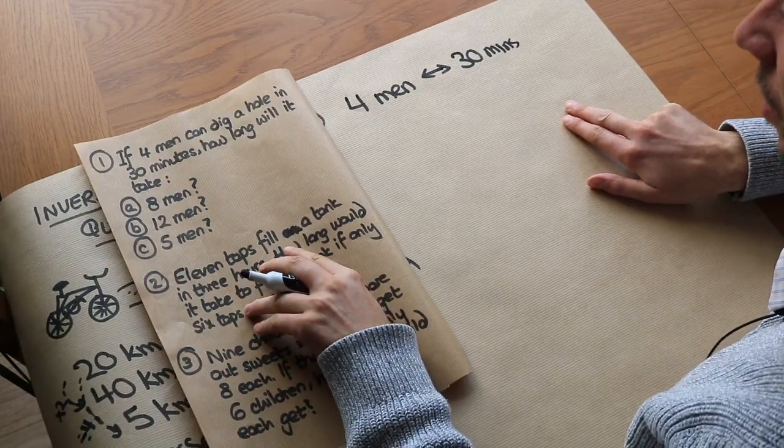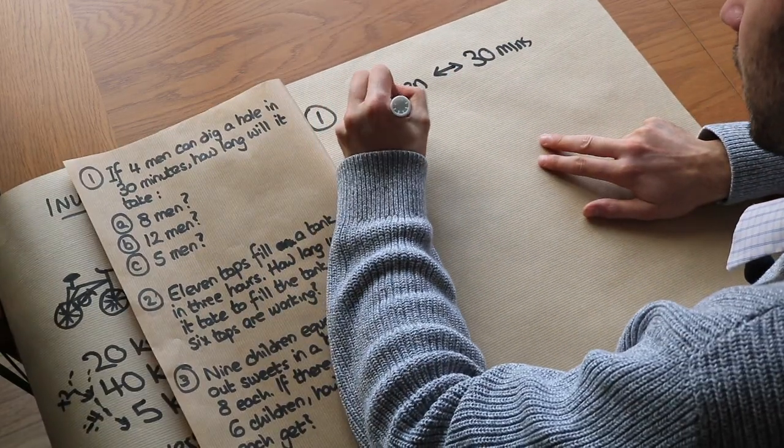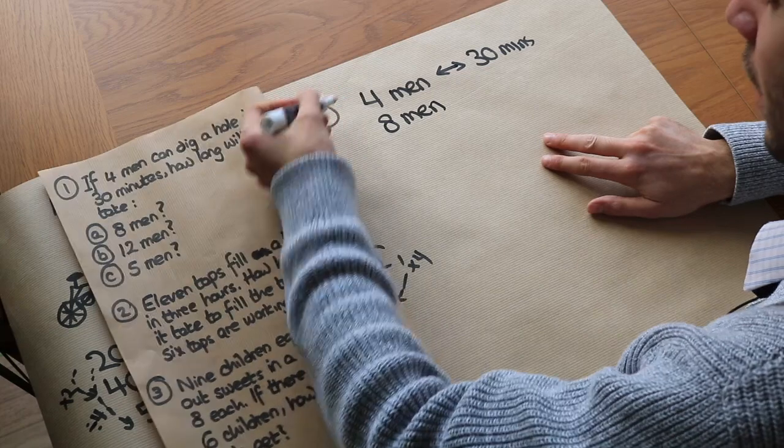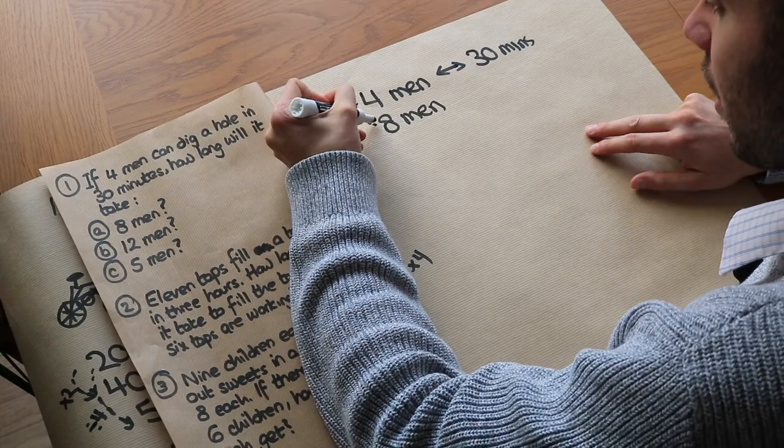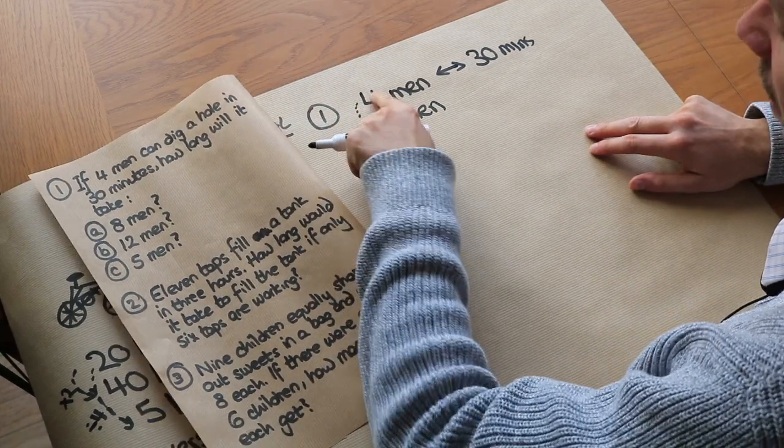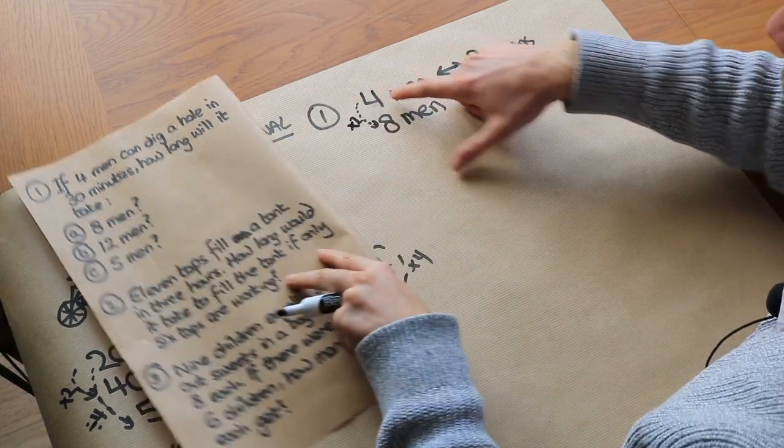And we want to work out how long it takes 8 men. So as before, we work out what the scale factor is. How many times bigger is 8 than 4? Well, it's twice as big; we just do 8 divided by 4.